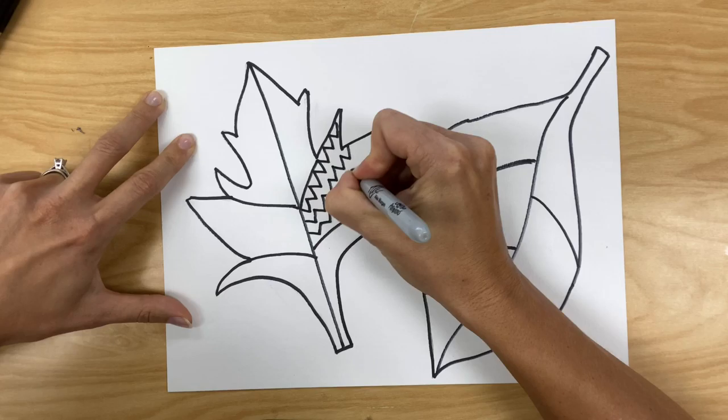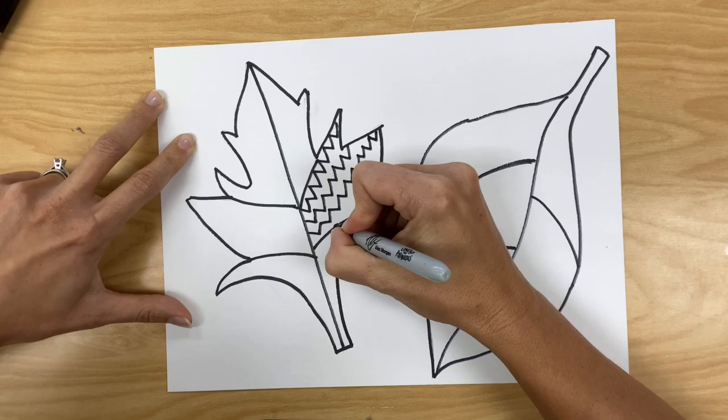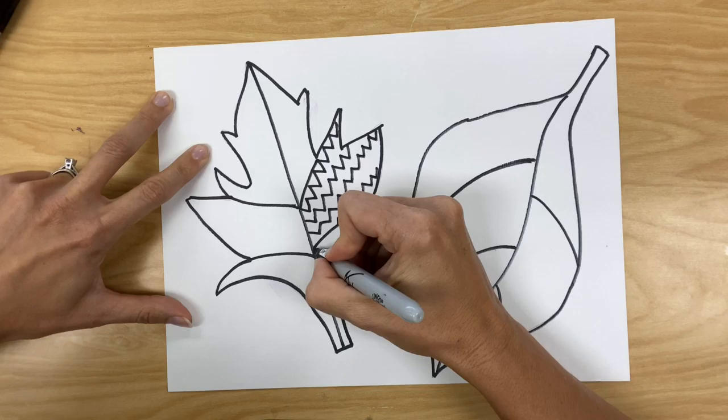Now reference the famous line worksheet as seen in this video and also posted on your Google classroom. On a separate piece of paper, practice creating different types of lines. Then in each section of each leaf, you are going to put a different type of line.